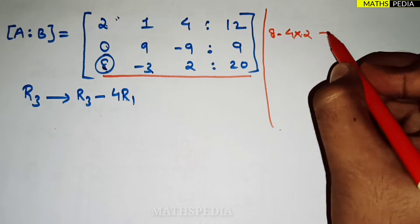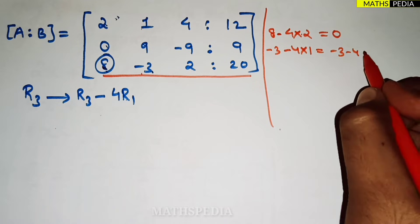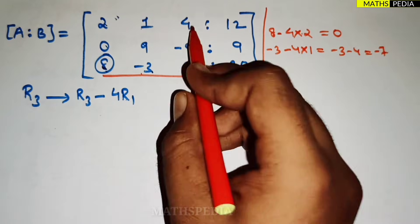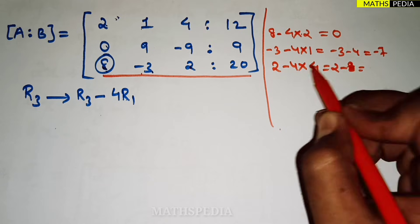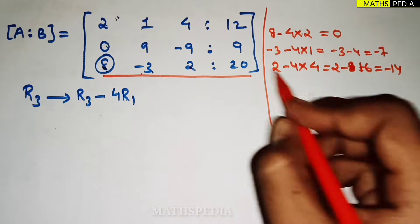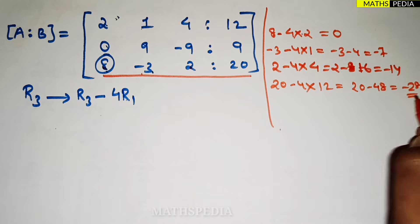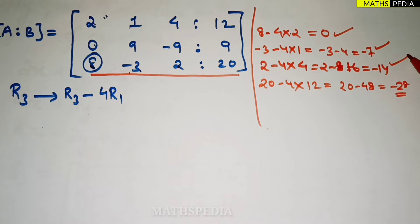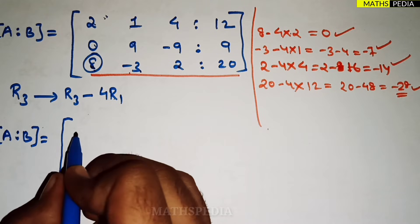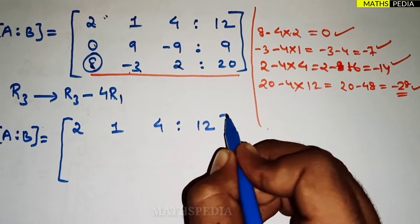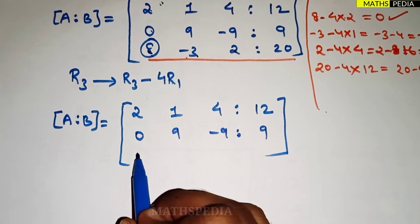Continuing R3 = R3 - 4*R1: minus 3 minus 4×1 = minus 3 minus 4 = minus 7. Next, 2 minus 4×4 = 2 minus 16 = minus 14. Next, 20 minus 4×12 = 20 minus 48 = minus 28. So the new third row is 0, minus 7, minus 14, minus 28. The augmented matrix now is: row 1: 2, 1, 4, 12; row 2: 0, 9, minus 9, 9; row 3: 0, minus 7, minus 14, minus 28.